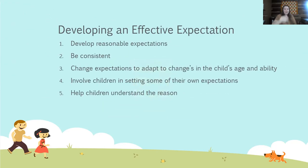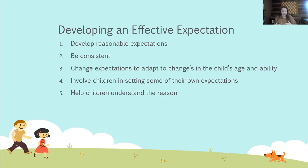One thing to keep in mind while developing effective expectations is to be willing to compromise. Your concern and the child's concern may be different. For example, in the Smith household, the expectation is that Emily goes to bed at nine o'clock. The foster parents state that Emily doesn't get enough sleep and is grumpy in the morning — there's a battle every night to get her to bed. Emily's concern is that she's not tired and gets bored. A compromise could be that Emily just needs to go to her room at nine o'clock, but can watch TV, listen to music, or read a book until she gets tired. You can revisit that expectation if it still doesn't work.